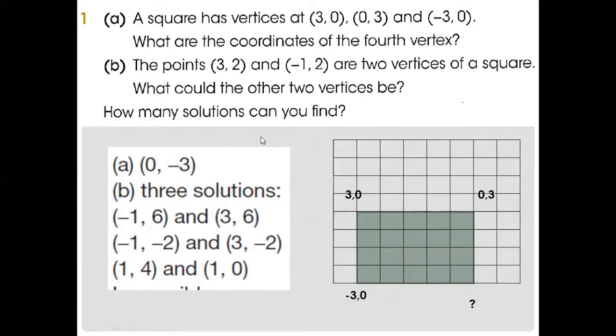So here, the first one is (-1, 6) and (3, 6). With the help of this, you can make a square of the other two vertices.